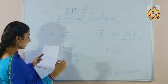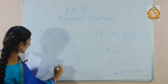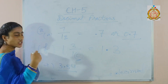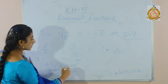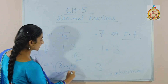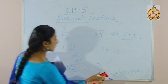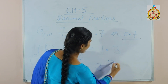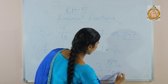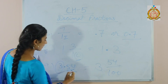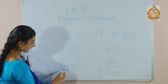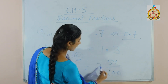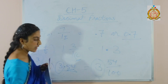Now third sum: write the decimals as mixed numbers. Statement 3.54 — we have to change this into a mixed fraction. This is the whole number part, so write 3. Then this is the decimal part: there are 2 decimal places, so 54 over 100. There will be 2 zeros with 1 because there are 2 decimal places. So 3 and 54 over 100.